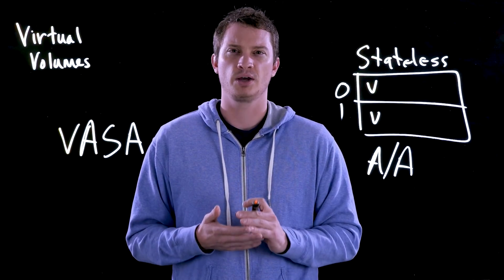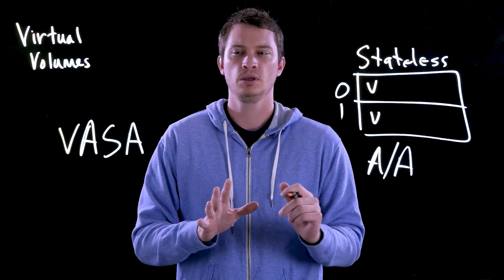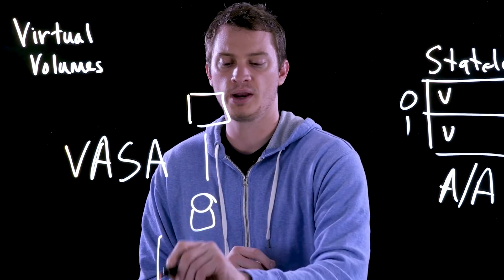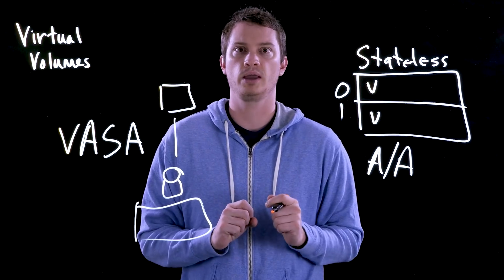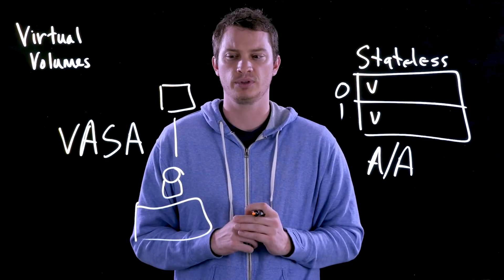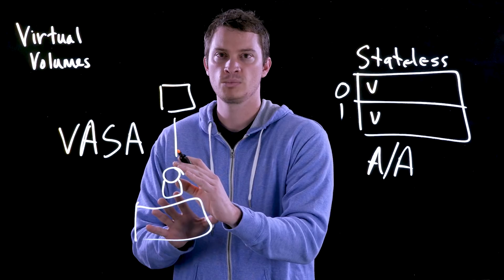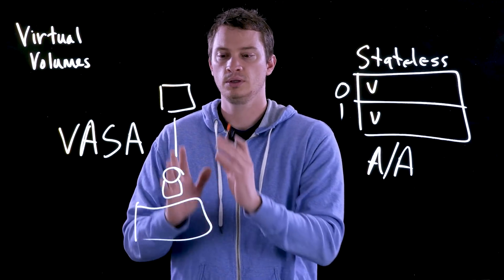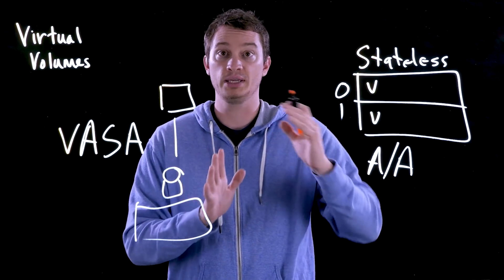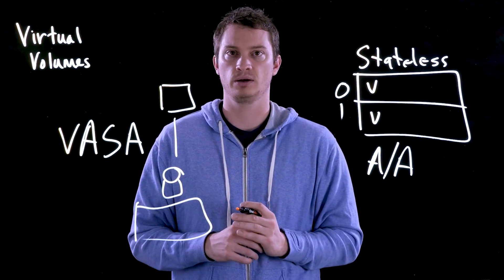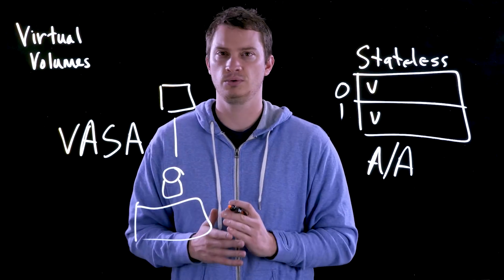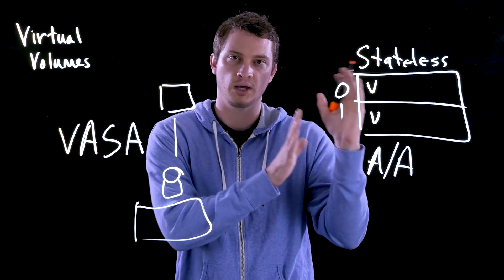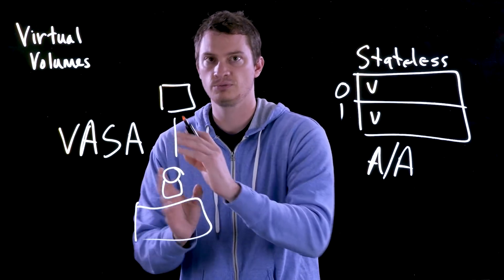An important point about VASA is that it is not in the data path. If you have a VM running with vVols on an array and somehow your VASA provider goes away and VMware can't communicate with it, your VMs continue to run. The execution of I/O to your vVols through your protocol endpoint is not controlled or in the path with the VASA provider. So there are two separate paths: the control path — VASA — and the data path — vVols protocol endpoint.